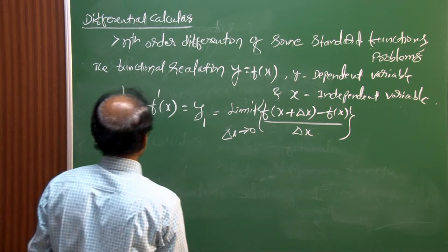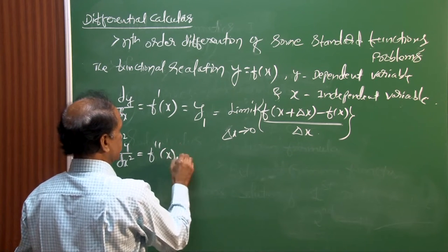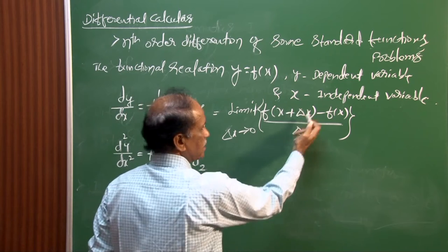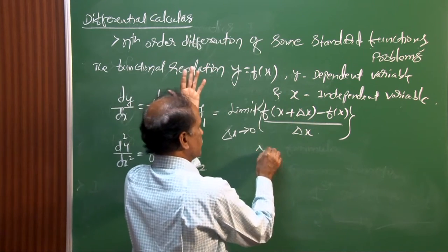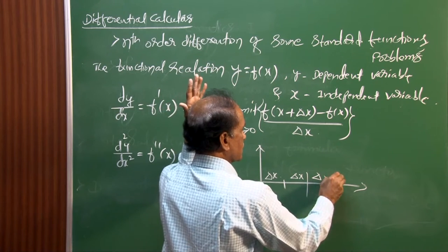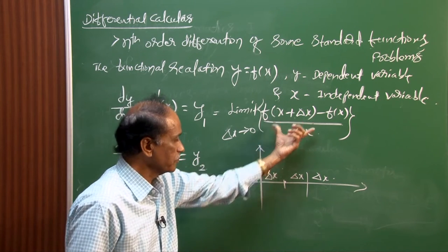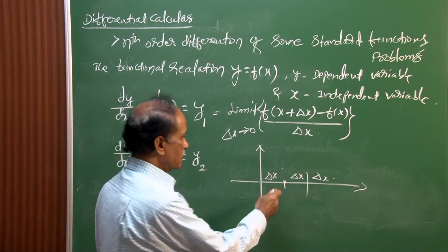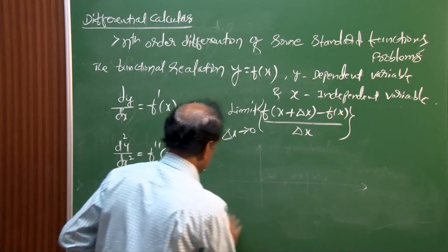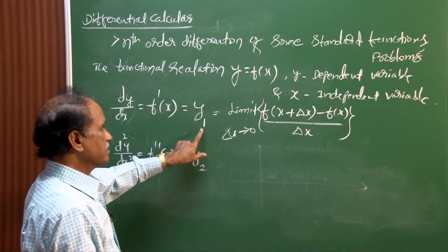If we write d²y/dx² = f''(x) = y₂, this is called the second-order derivative. Taking one increment Δx from the origin gives the first-order derivative; taking two increments gives the second-order differential coefficient. Similarly, d³y/dx³ = f'''(x) = y₃, and so on.